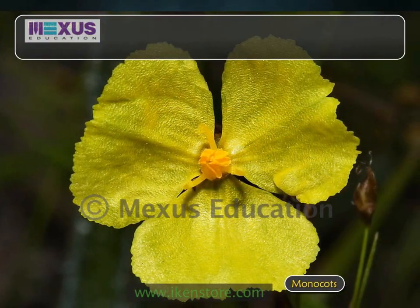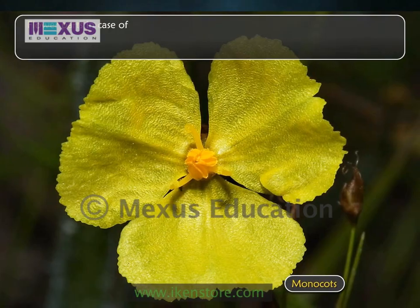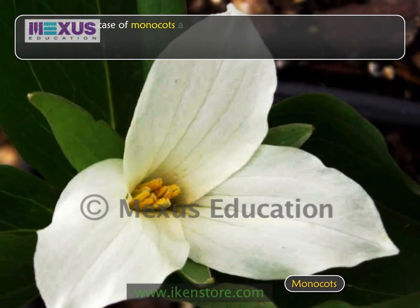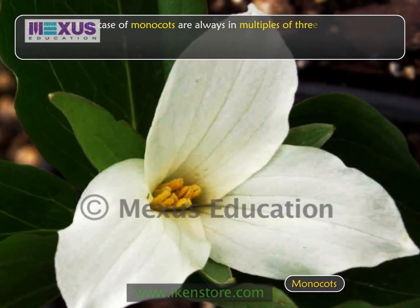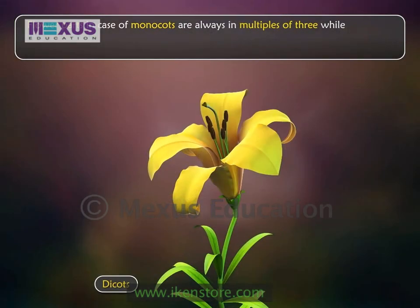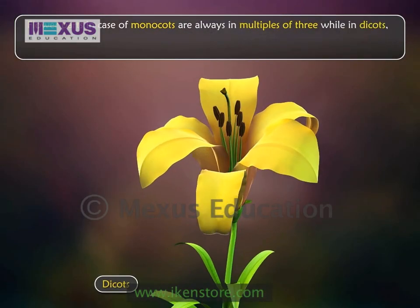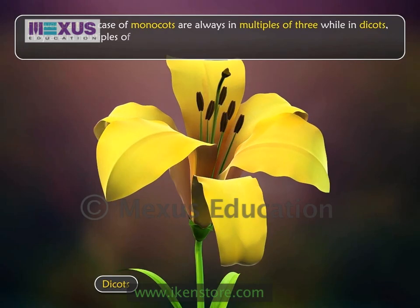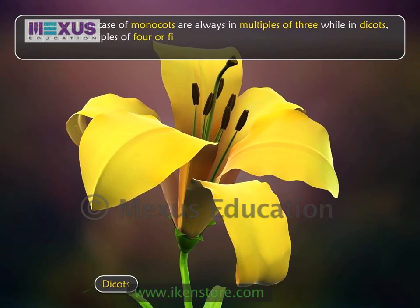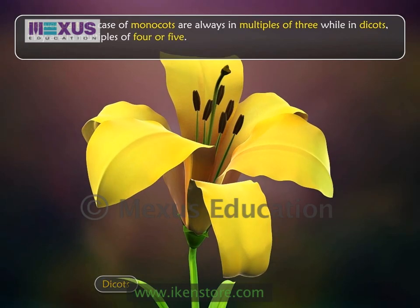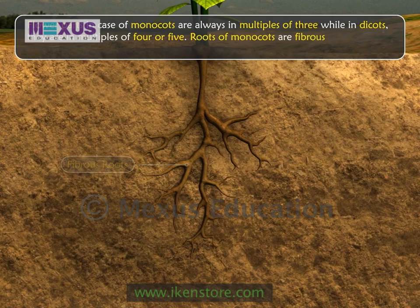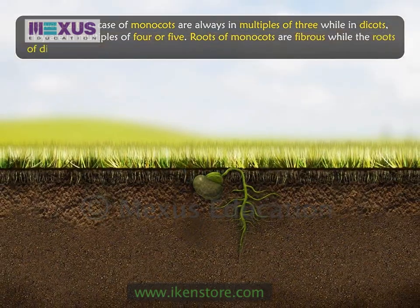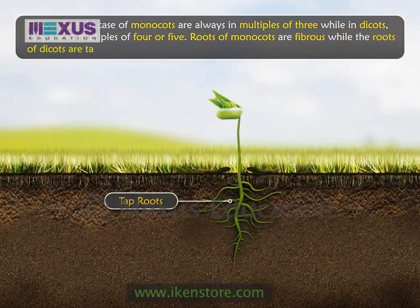Flower parts in the case of monocots are always in multiples of three, while in dicots they are in multiples of four or five. Roots of monocots are fibrous, while the roots of dicots are tap roots.